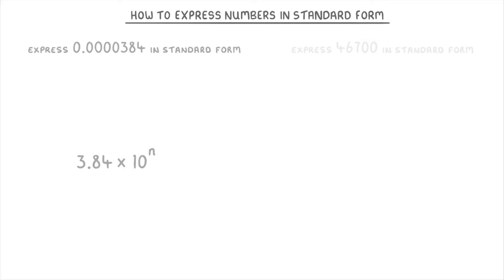Remember, the front number has to be between 1 and 10, or in other words, we always need only one digit behind the decimal point. To find out what the power will be, we need to take our original number and count how many places the decimal point needs to move, which is one, two, three, four, five places, and this tells us that our power is going to be five.